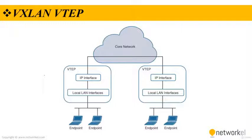To facilitate the discovery of VNIs over the underlay layer 3 network, virtual tunnel endpoints — VTEPs — are used. VTEPs are entities that originate or terminate the VXLAN tunnels. They map layer 2 and layer 3 packets to the VNI to be used in the overlay network. Each VTEP has two interfaces: local LAN interfaces and the IP interface. The local LAN interfaces provide bridging between local hosts.